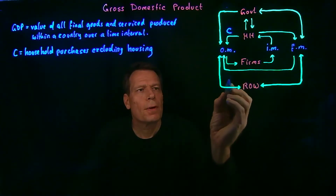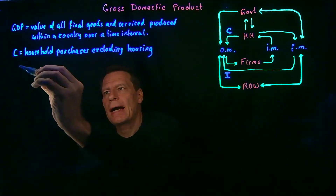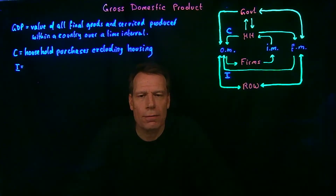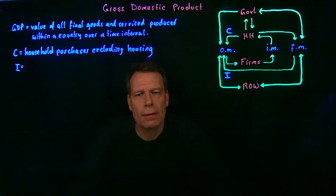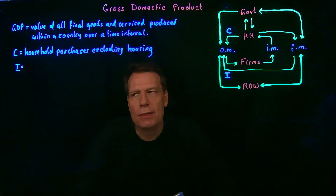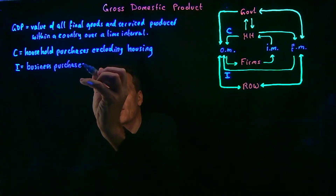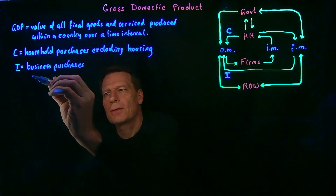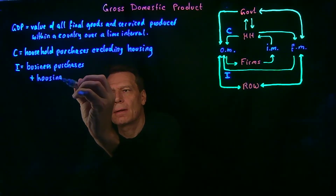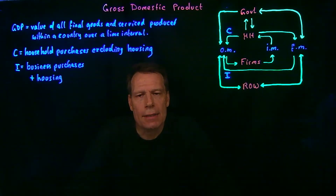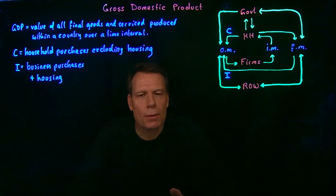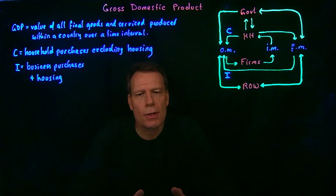The second category is what firms do. Firms make what we call investments. I stands for investments, but not the kinds of investments we often think of — like how much you've saved in financial markets. By investments, we mean business purchases, plus residential housing purchases that we subtracted from consumption. Business purchases include things businesses buy to produce goods to sell to consumers: expanding a factory, buying new equipment, computers, or hiring services to help produce goods.